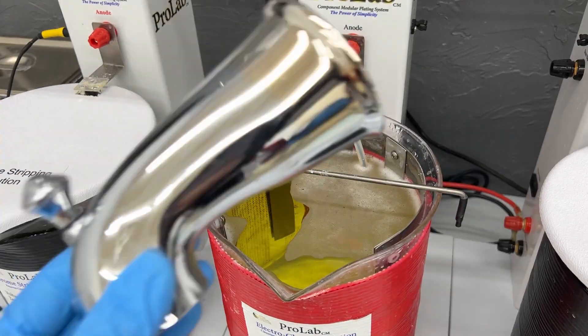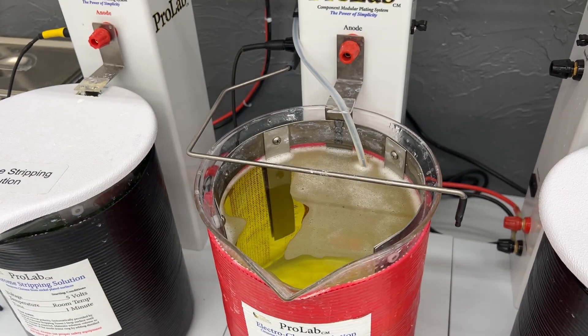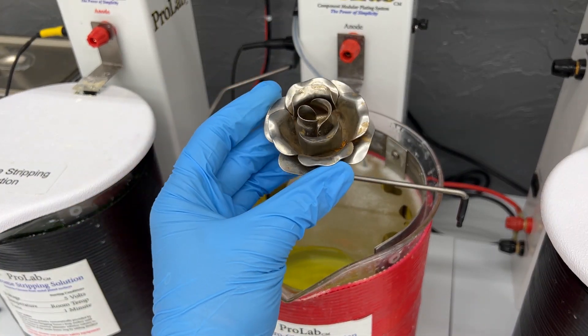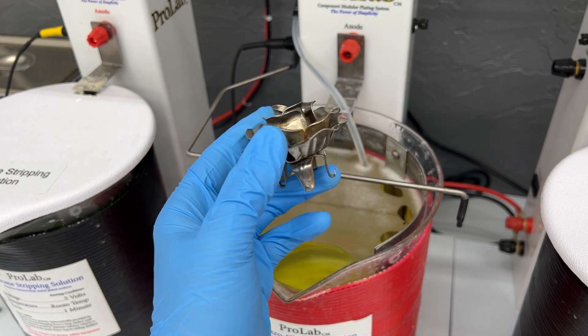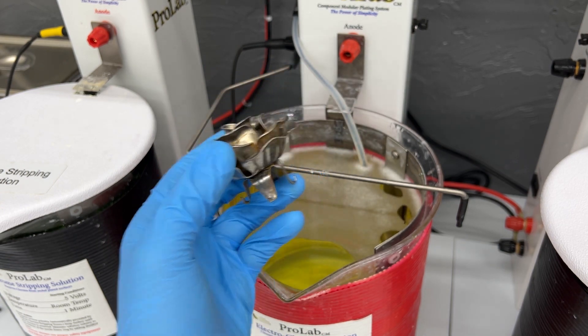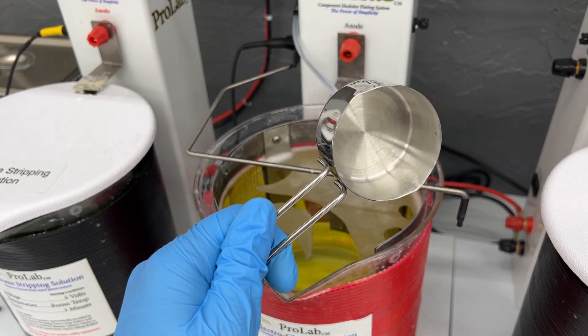Plating with this flower, you can see that there are a lot of potential areas to trap solution and not be rinsed off properly. This measuring cup, you can see that it has the potential to trap air in it when you are plating, causing the part not to wet out.